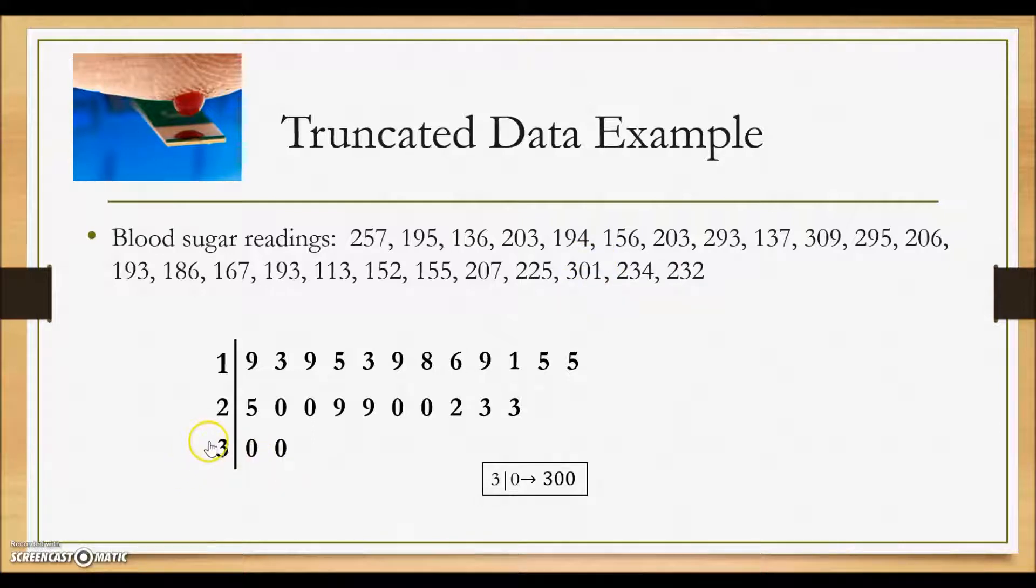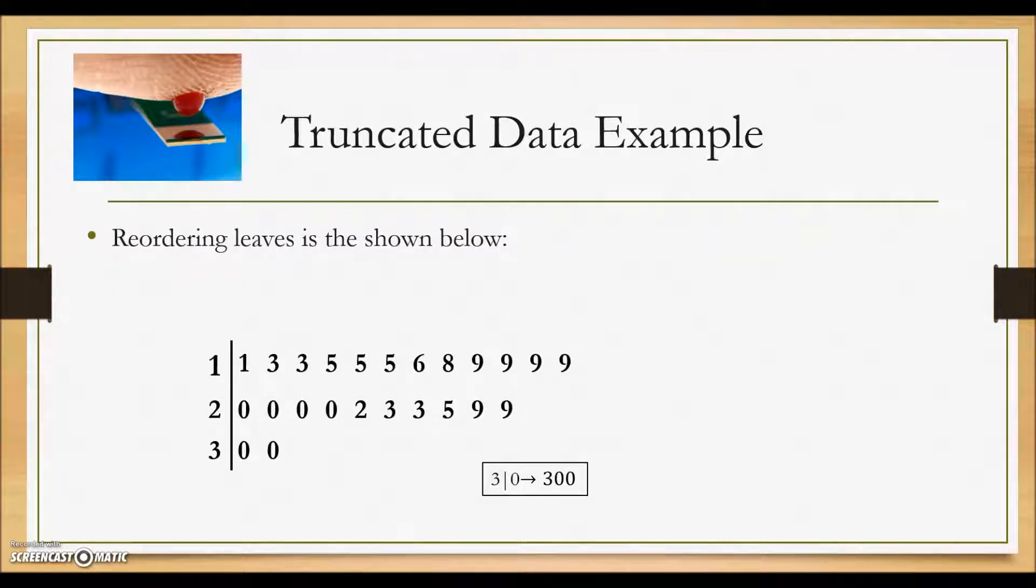Because of the truncation, we're essentially rounding it without using the conventional rounding values to get a sense of what the data looks like. Most of the readings we can see are in the 100 range, with fewer in the extreme over 300.